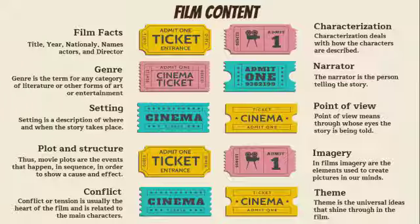B: Genre — genre is the term for any category of literature or other forms of art or entertainment. C: Setting — setting is a description of where and when the story takes place.